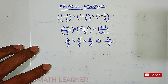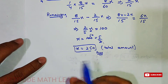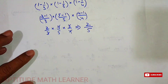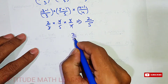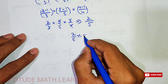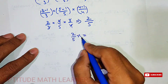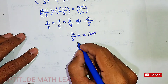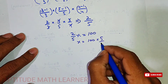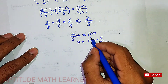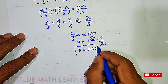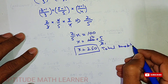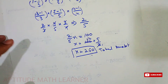This 2/5 is the same result we got in the complete method. So 2/5 of x equals 100, giving x equals 250. This confirms the total amount is 250 rupees. I hope you have understood both methods clearly. Thank you very much.